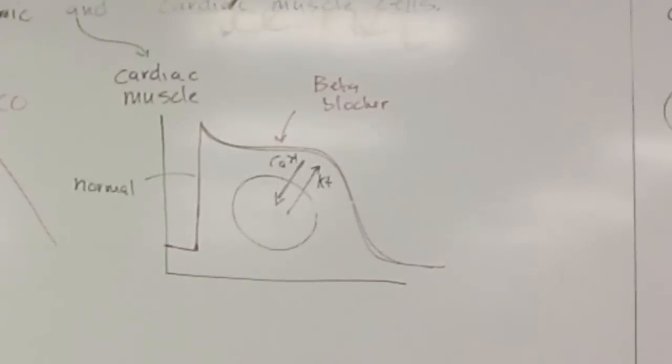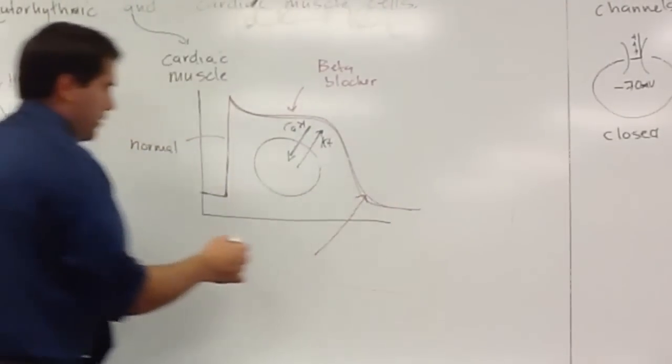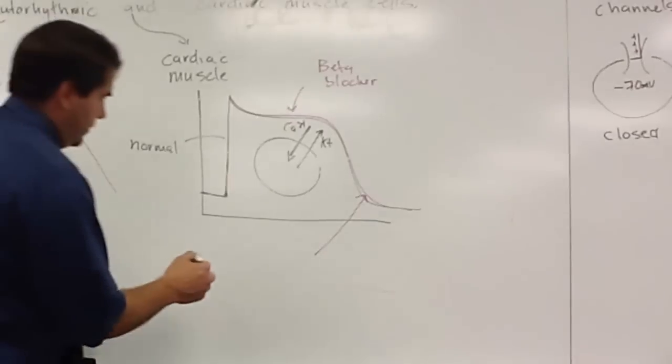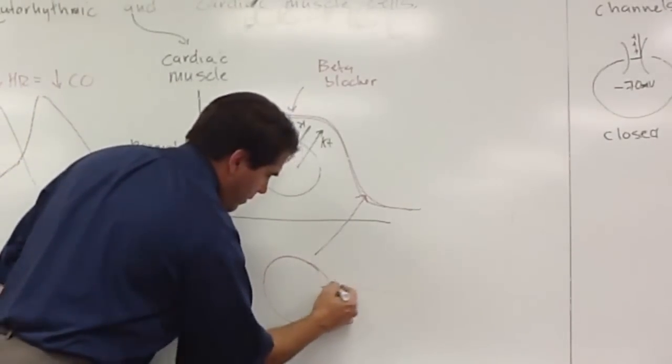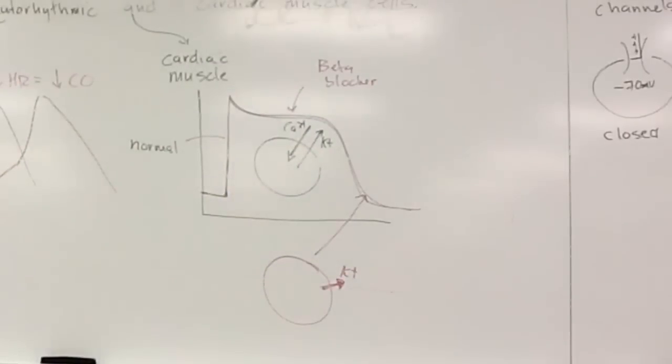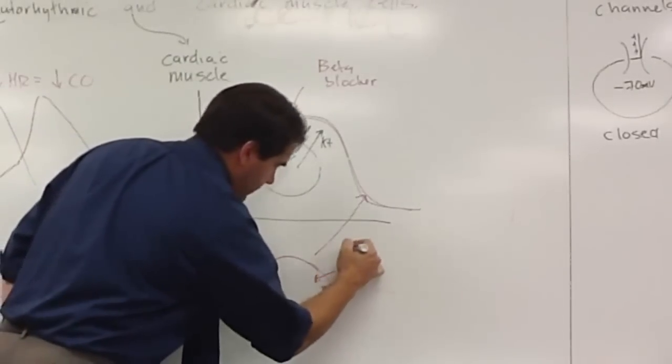But in the case of beta-blocker, I'll draw it down here. Beta-blockers block potassium channels in the cardiac muscle. So what's going to happen here is potassium cannot leave as well. You block channels that are letting potassium out. And since potassium and calcium are linked, that means less calcium in.